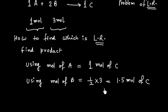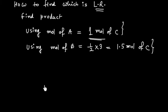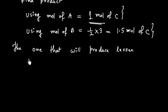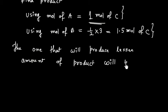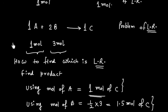The rule is: the one that gives the lesser amount of product will be the limiting reagent. In this case, A gives 1 mole of product and B gives 1.5 moles. So A gives the lesser amount, meaning A is the limiting reagent.